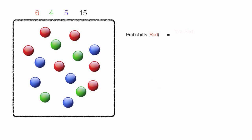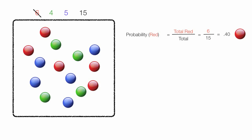I start out the same way: I figure out the probability of picking a red marble, which is total red out of the total. In this case it's 6 out of 15, which is still 0.40. So I pick my red marble and I don't put it back. Now I'm left with 5 red marbles, and my total goes down to 14. I calculate again: the new total red out of the new total is 5 out of 14, which equals 0.36.